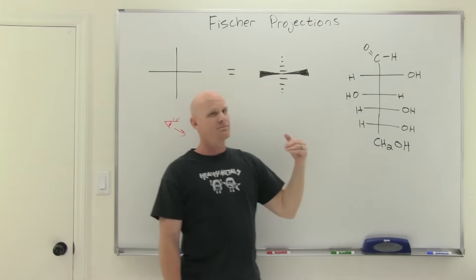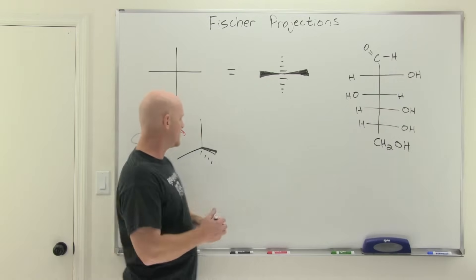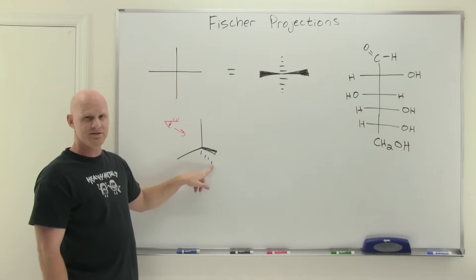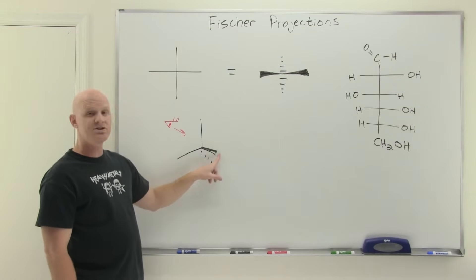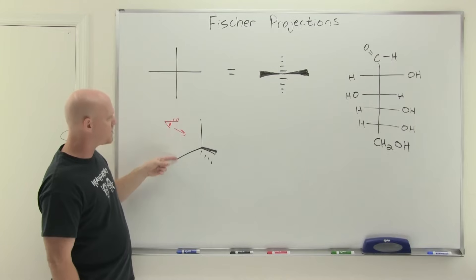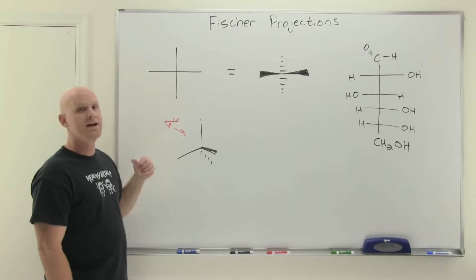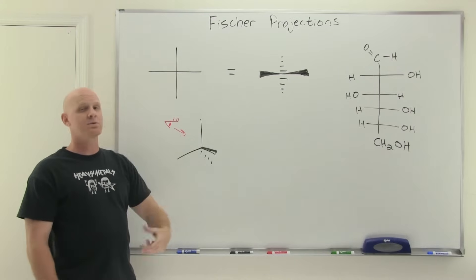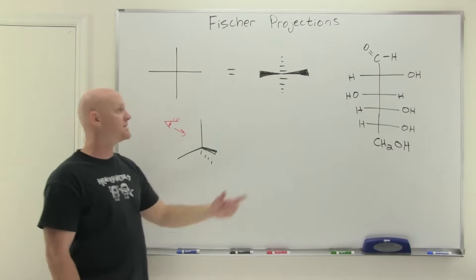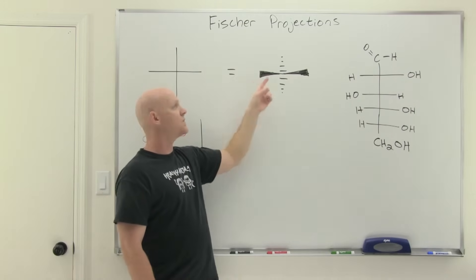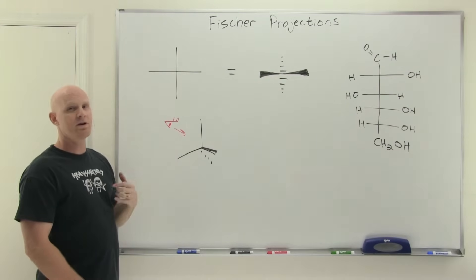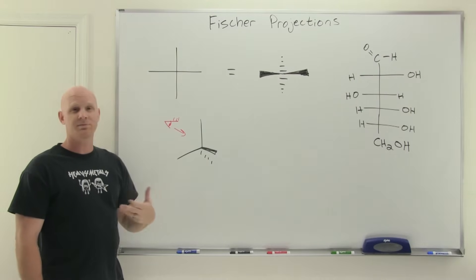Fischer projections are also really convenient for assigning R and S. Normally, we assign R and S with the lowest priority group in the dashed position, but it was a pain when the number four priority group was in one of the bonds in the plane. What's nice about a Fischer projection is that there are no bonds in the plane — everything is either a wedge or a dash — so we never have to worry about that third scenario where number four priority is in the plane.